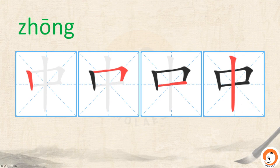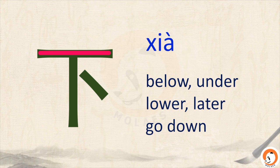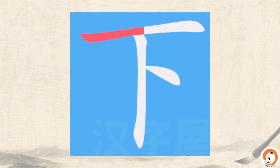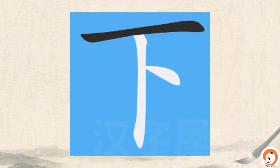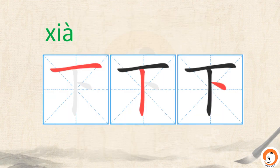中. 下 means below, under, also means lower, later, and going down. 下. 一, 二, 三 — three strokes. Let's do it together: 一, 二, 三 — 下.